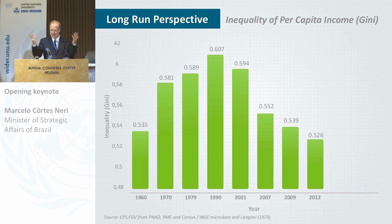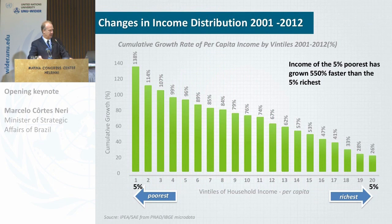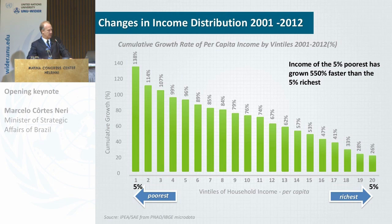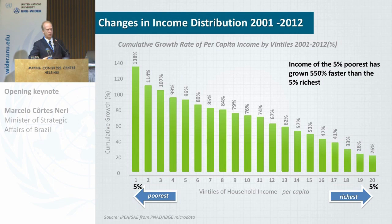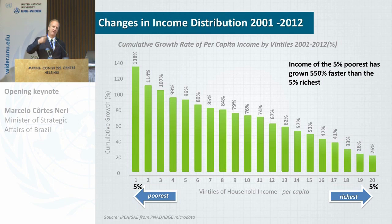The Gini falling from 0.59 to 0.52 — what's the big deal? This gives a better idea of the size of the distribution change. Dividing the population in 20 tiles, the 5% poorest grew in real per capita terms 138% over this 11-year period from 2001 to 2012, while the 5% richest grew 26%. So the poorest are growing 550% faster than the 5% richest.